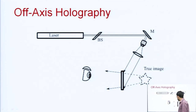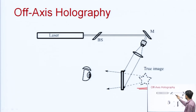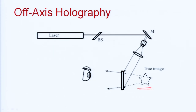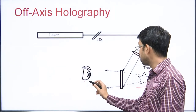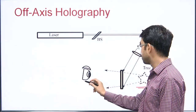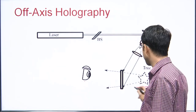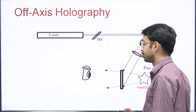This is how we reconstruct the image — using the same reference beam. The reference beam illuminates the holographic plate on which the image is recorded, and the viewer sees an image that feels like a real object.